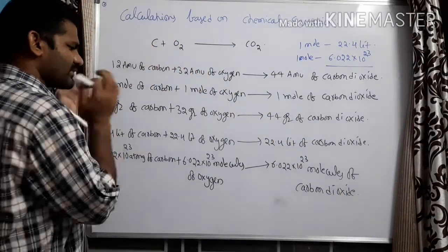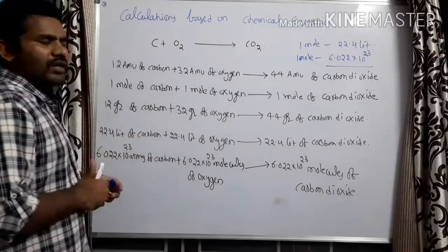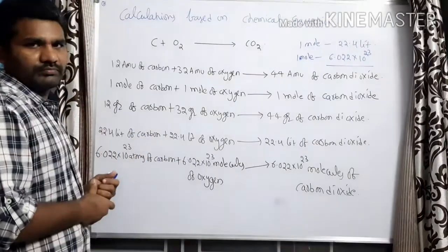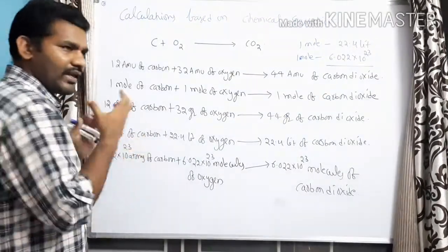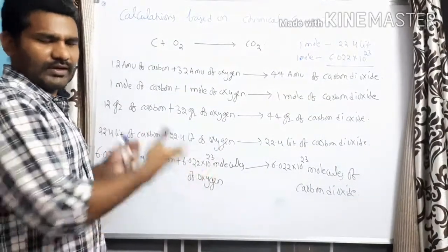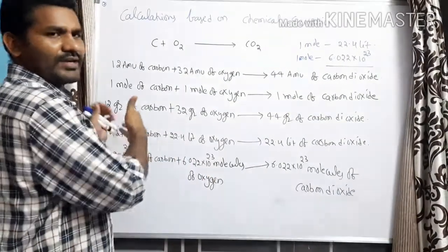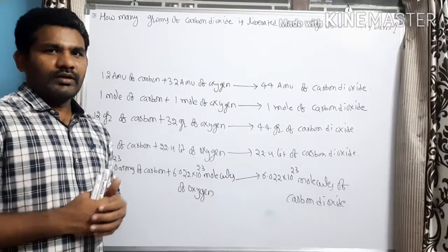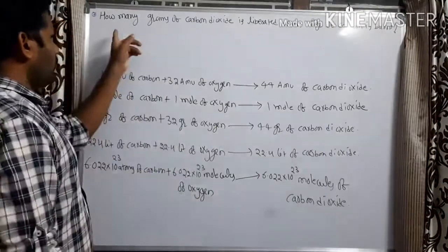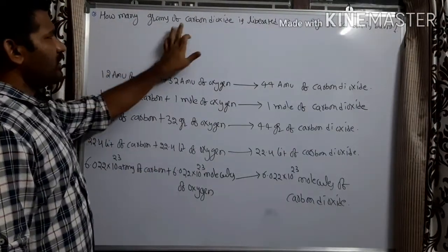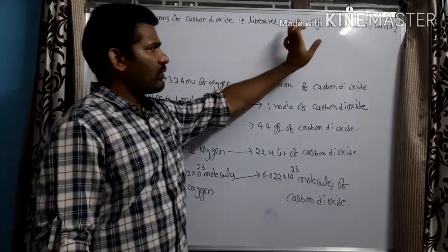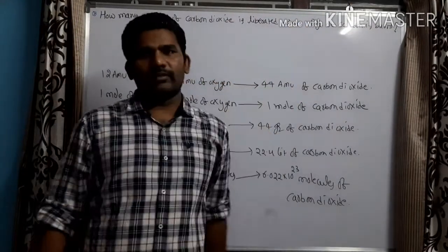When you understand this concept carefully, you can do any problem. Let us take an example to understand it better. Now see the problem: how many grams of carbon dioxide is liberated when 6 grams of carbon is burnt?